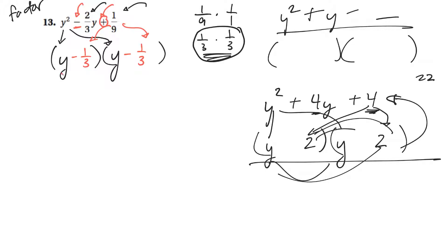Now I'm going to multiply and check. So y times y is y squared. Y times that is negative 1/3 y. Negative 1/3 times y is another negative 1/3 y. And 1/3 times 1/3 is 1/9, minus times a minus would be a positive.